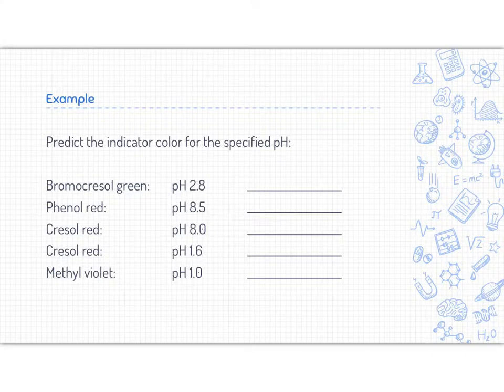So we have two examples here. The first one, we just need to predict the indicator color for the specified pH. So if we have a solution that has a pH of 2.8, and we're measuring it using bromocresol green, if we added drops of bromocresol green to our solution, what we need to look at is that bromocresol green changes color from 3.8 to 5.4. Now, 2.8 is less than 3.8, and anything less than 3.8 will be yellow.